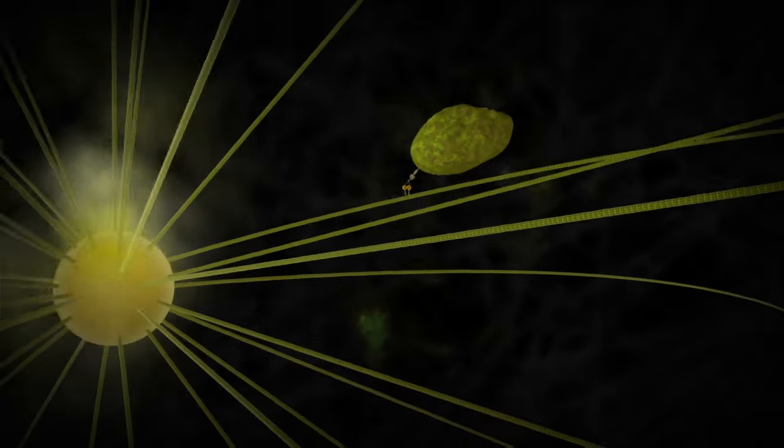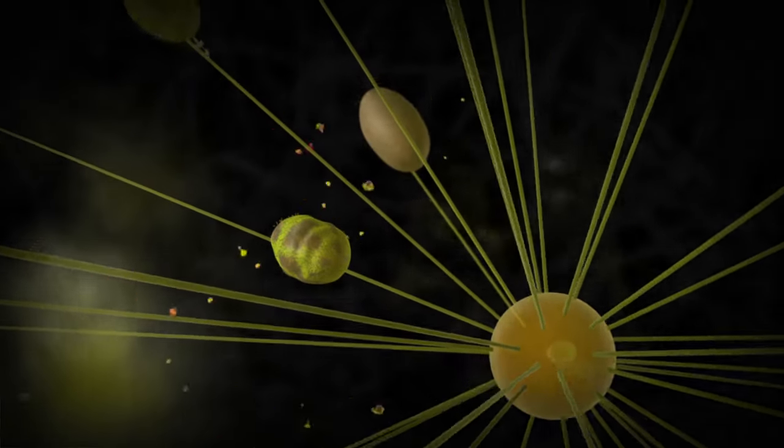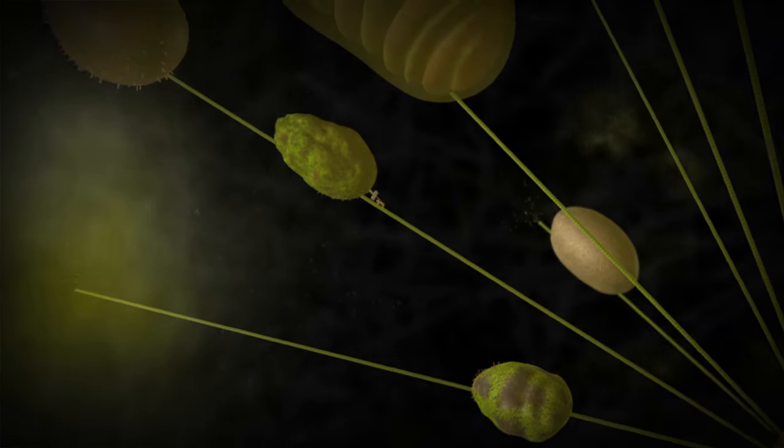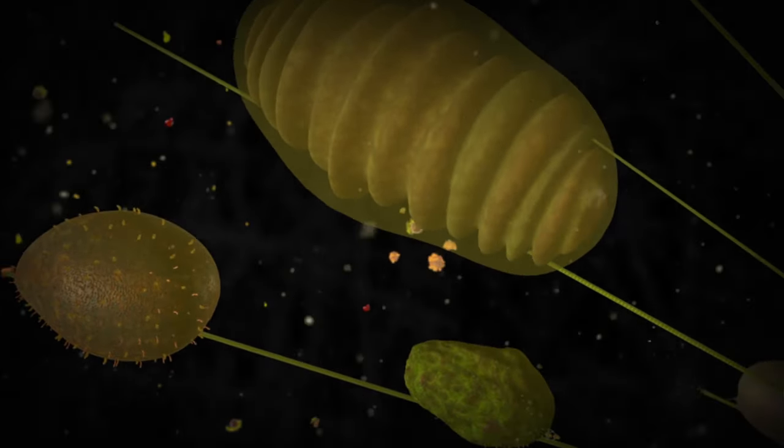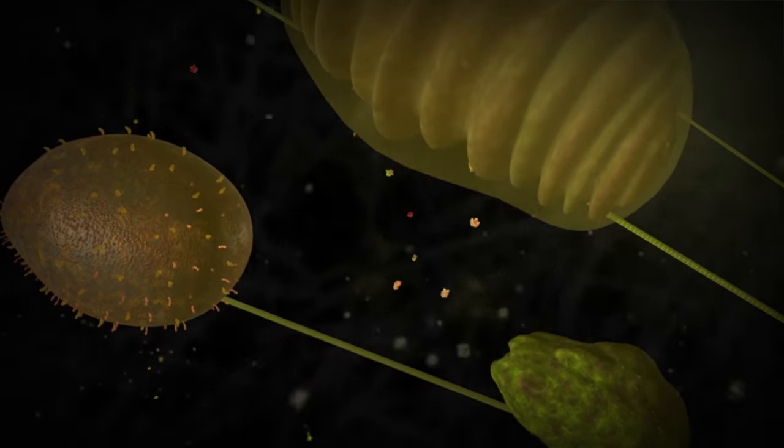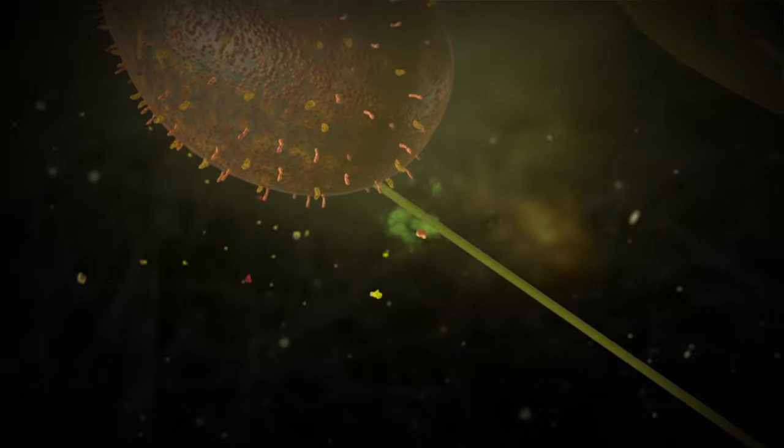Cells are full of specialized components that perform functions vital to their existence. But how do these components get to the right locations inside the cell to perform their functions? For larger components, a transportation system is needed.